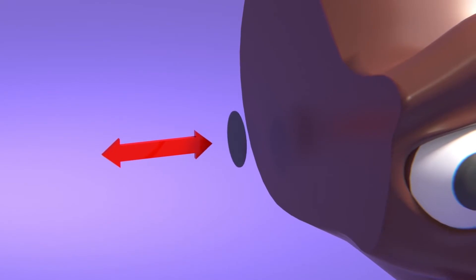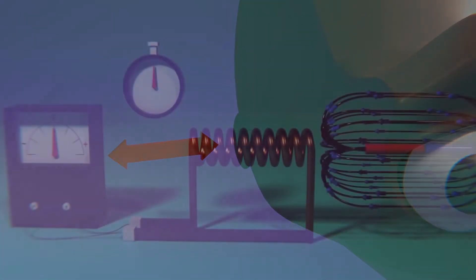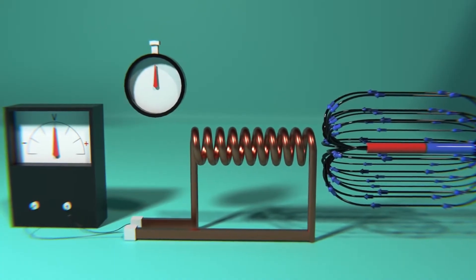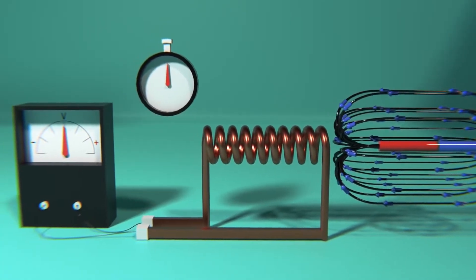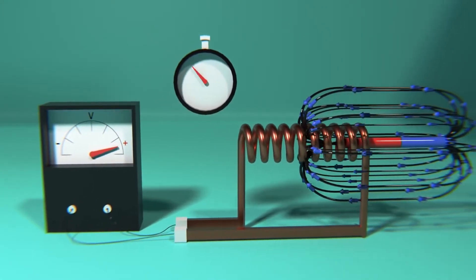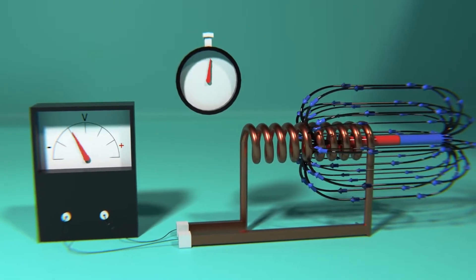It sounds to me like we've seen that before, in the previous episode on how electricity is generated. Michael Faraday discovered that moving a magnet inside a coil of conductive material generates a voltage difference, which also changes its polarity depending on the direction in which the magnet is moving.